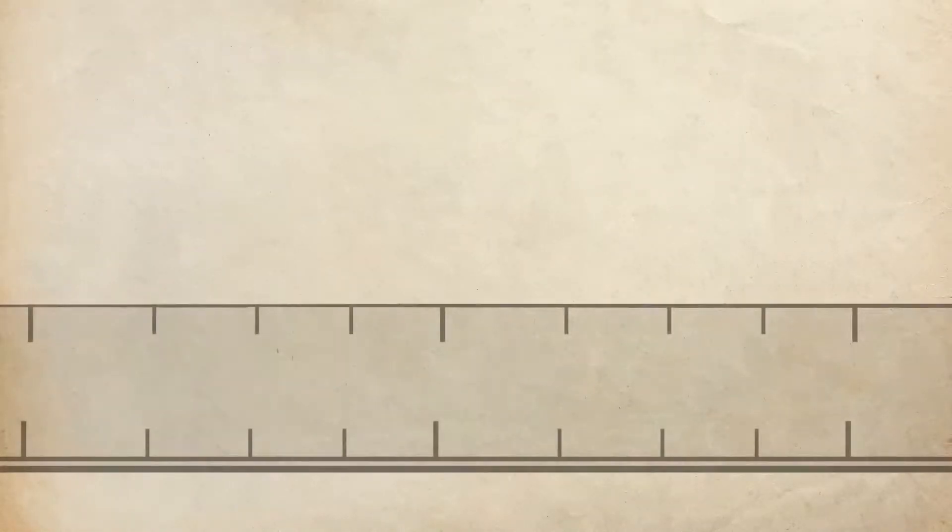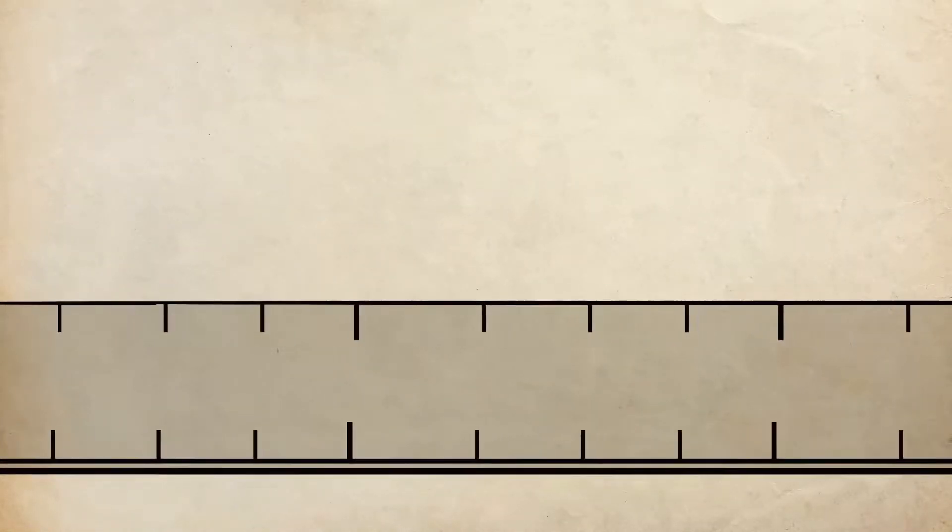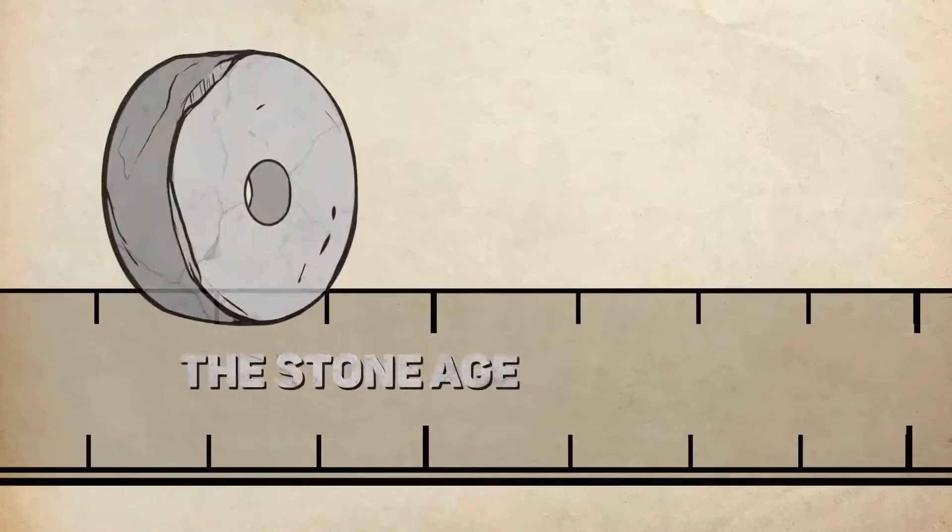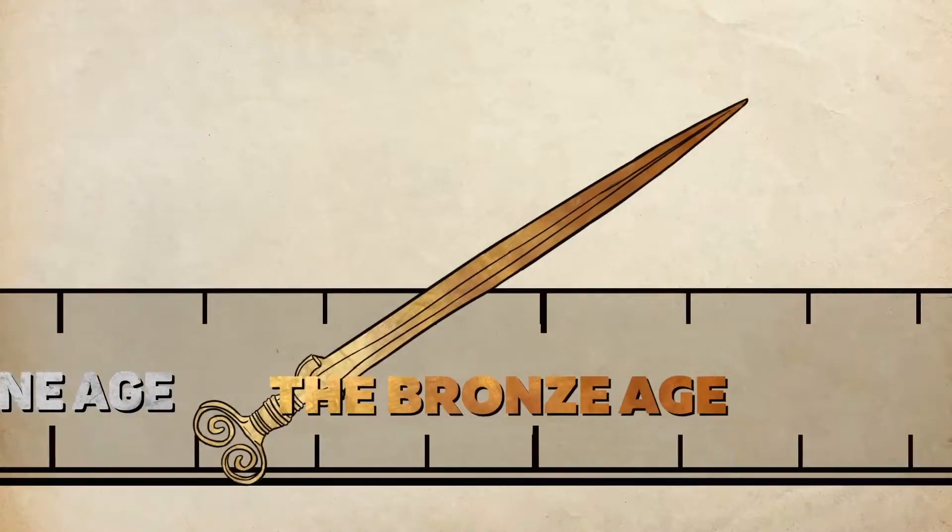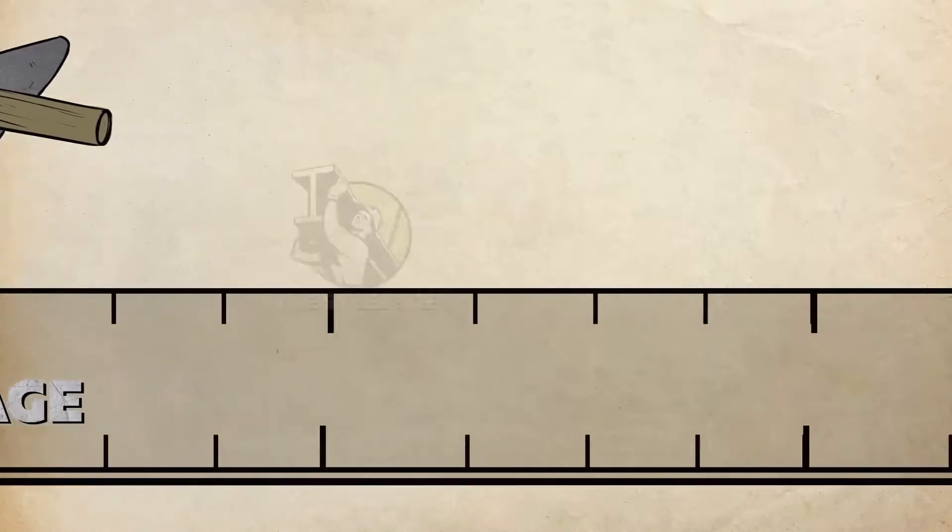The ages of civilization are known by their advanced materials: stone, bronze, iron, steel, and silicon.